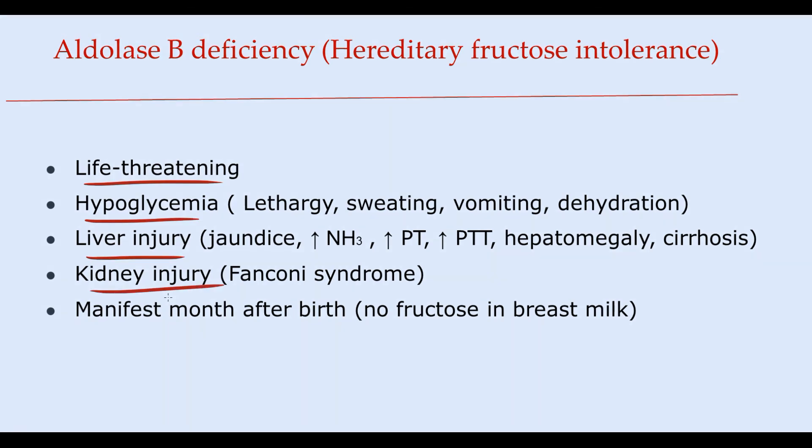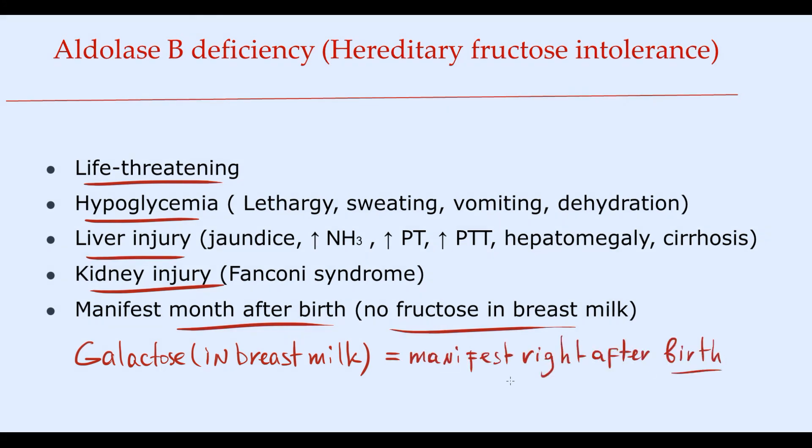And another diagnostic feature is that hereditary fructose intolerance manifests months after birth because fructose is not present in breast milk. For example, galactosemia manifests straight away right after birth, and the reason for it is that galactose is contained in breast milk. So right after birth, while baby is breastfeeding, galactosemia manifests straight away. But aldolase B deficiency remains completely asymptomatic.